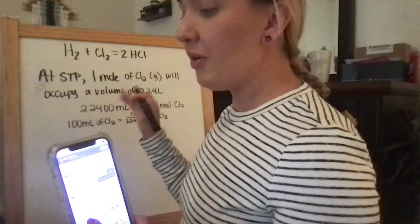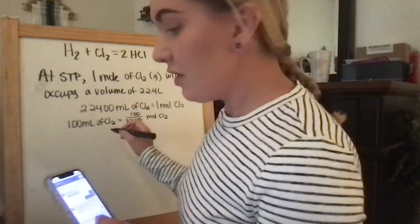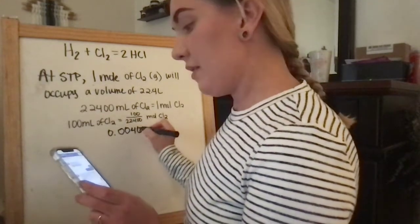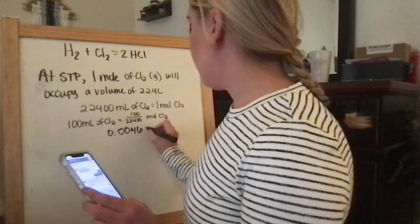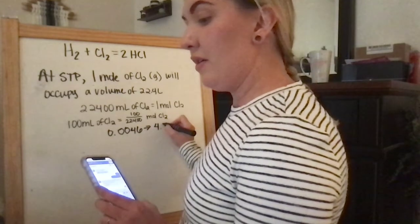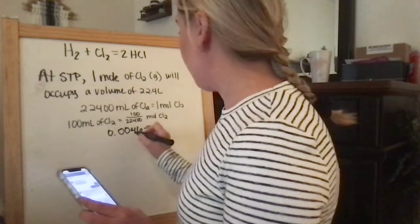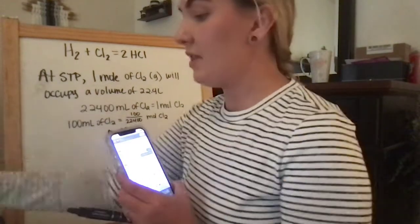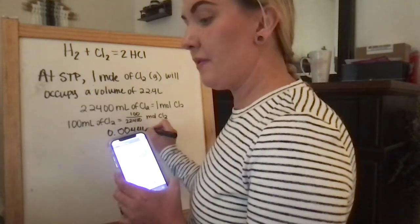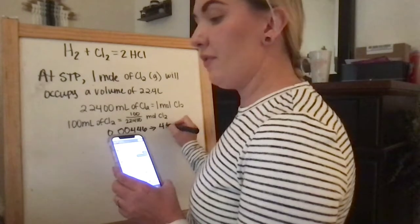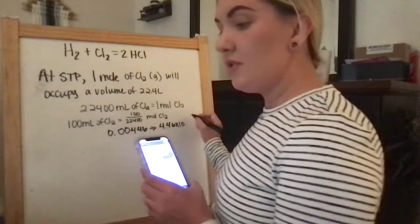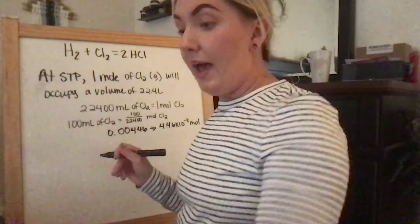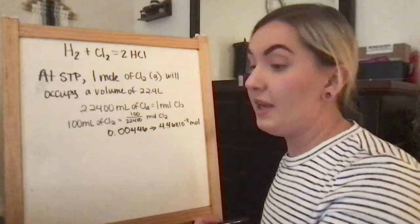So we have, I'm going to write the number down first, and then we're going to write it in scientific notation. So we have 0.00446, and that also changes into 4.46 times 10 to the negative 3 mole. So now we've figured out how many moles of chlorine gas is used.